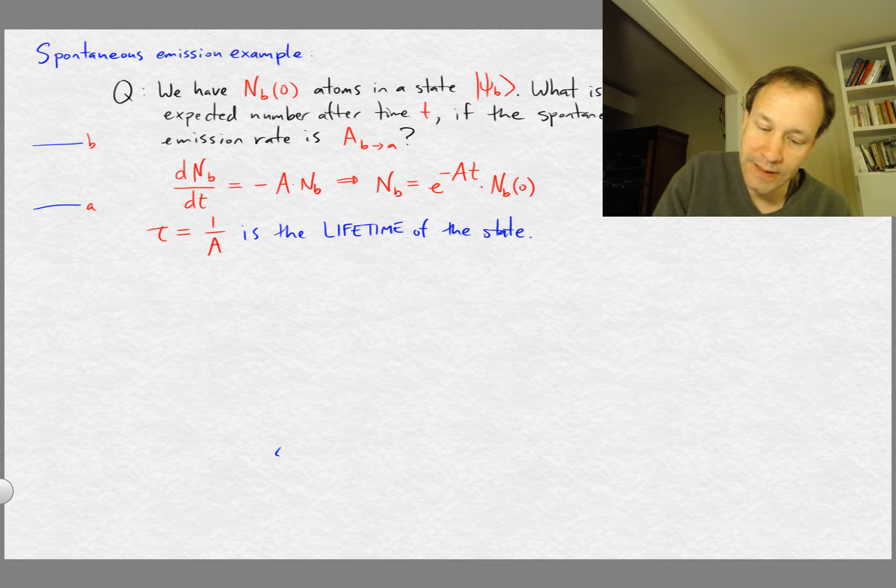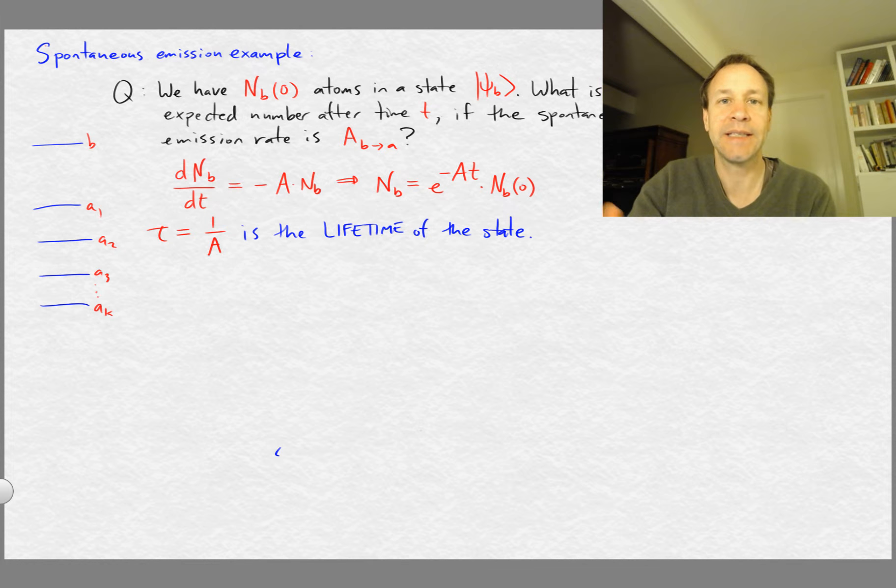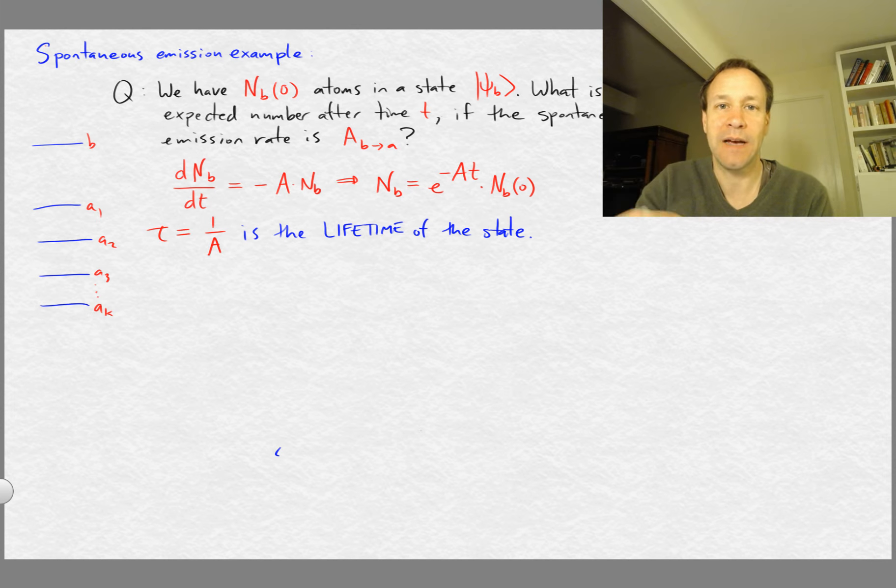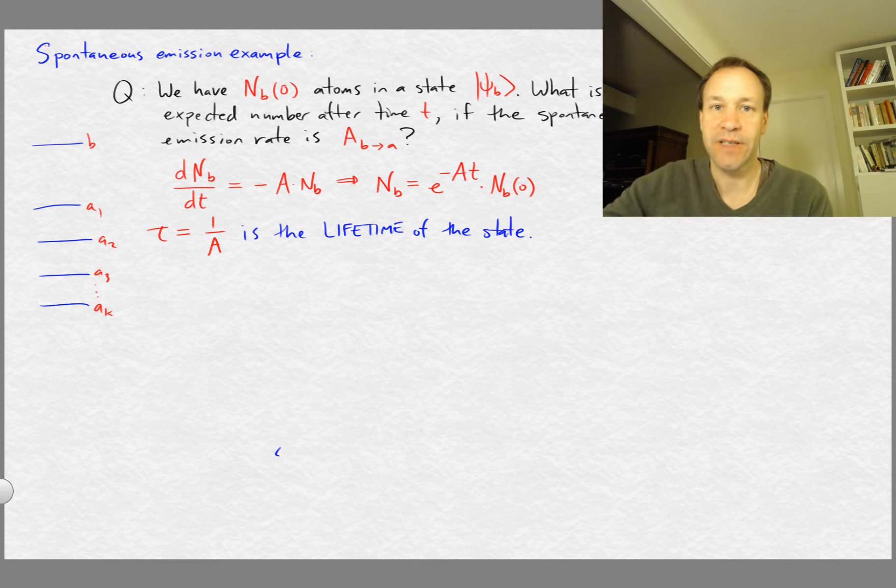What if instead of just one lower energy state, we actually have various lower energy states, a1, a2, a3, maybe up to some a_k. In that case, what would the lifetime of our state be, or what would the number of atoms in the b state remaining be after some amount of time?